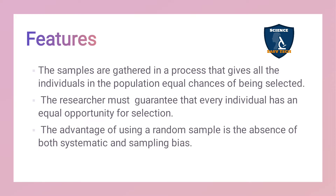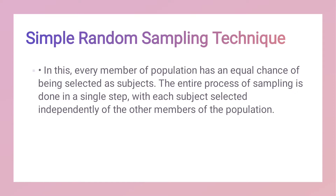That equal-chance concept is what is called probability sampling. The samples are gathered in a process that gives all individuals in the population an equal chance of being selected. The researcher must guarantee that every individual has an equal opportunity for selection. The advantage of using random sampling is the absence of both systematic and sampling bias, unlike non-probability sampling where bias is a major disadvantage.